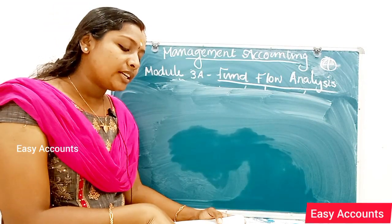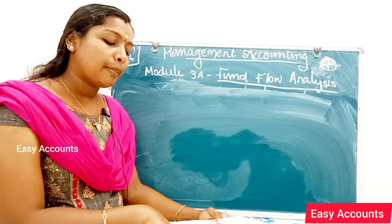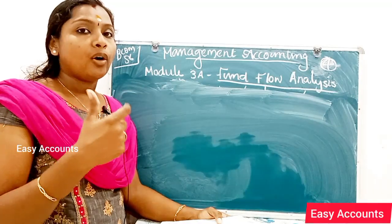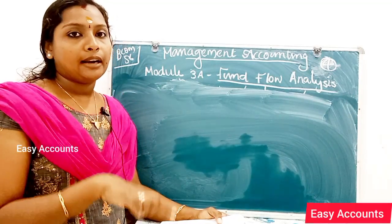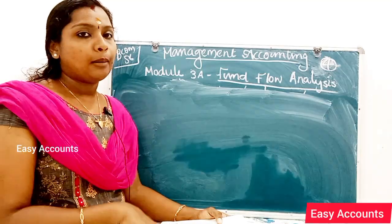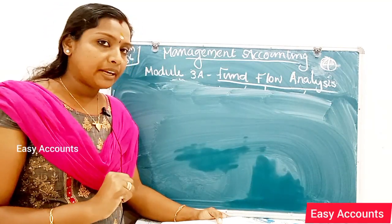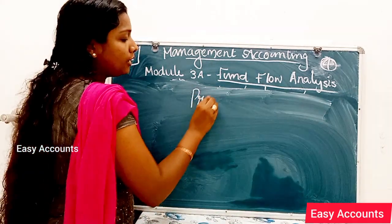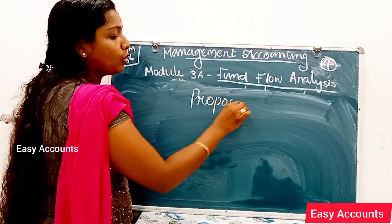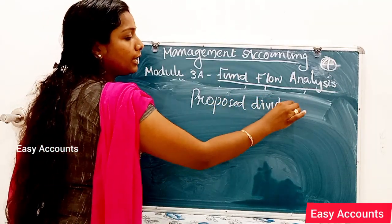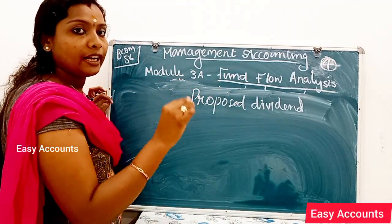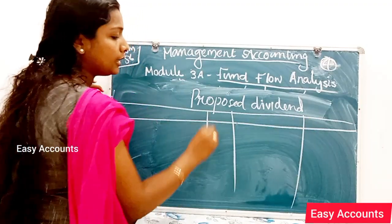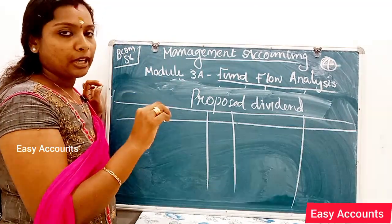If the proposed dividend is treated as a non-current liability, then a separate ledger account is opened. When required, we will prepare the proposed dividend account. This account is treated as a non-current liability. Once the proposed dividend is approved, it becomes a liability. In the balance sheet, the proposed dividend is classified under short-term provisions.